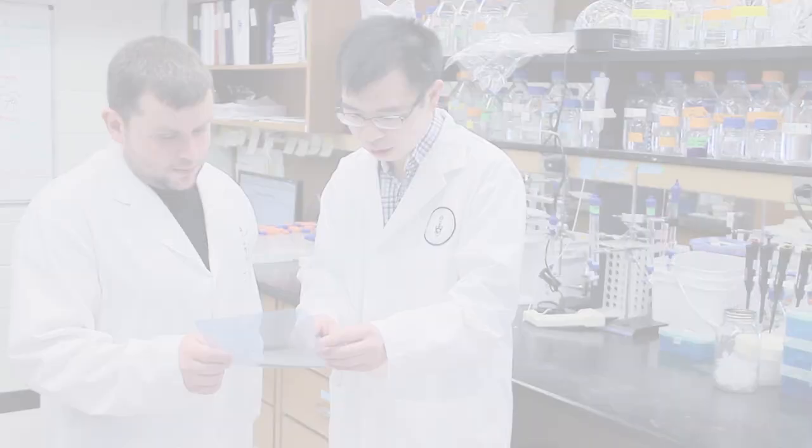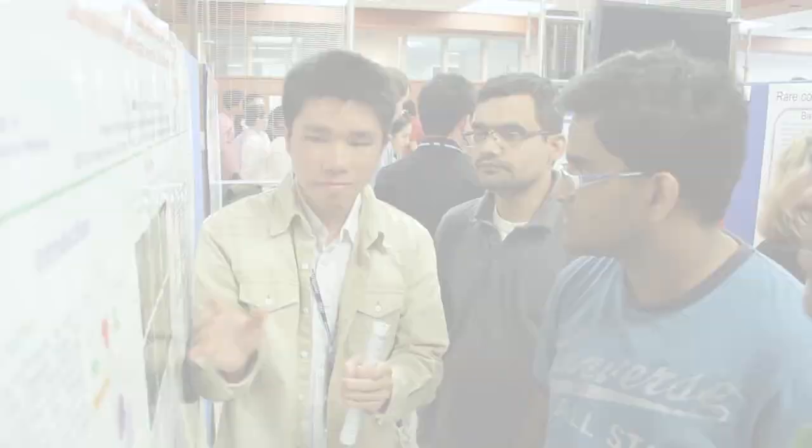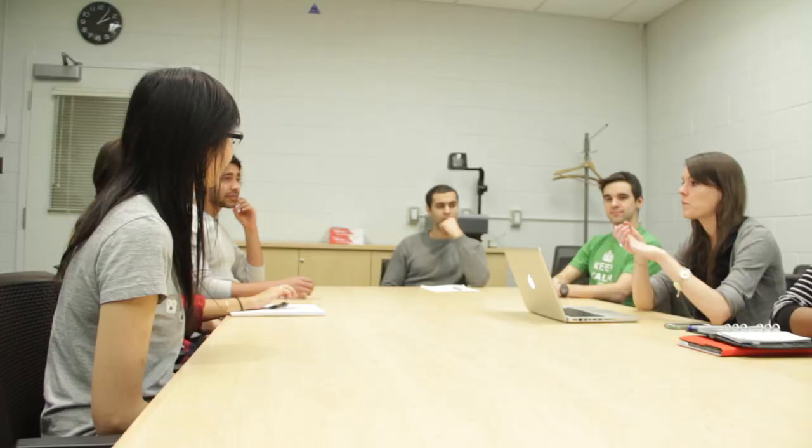Once you have an area of interest that you want to pursue, speak to course instructors and professors, teaching assistants, and graduate students whose areas of study are of interest to you. Talk to classmates and upper-year students, especially those who have already participated in undergraduate research, including the research opportunity program, credit courses, and summer student research opportunities. Join undergraduate student societies and unions, which often provide information sessions and seminars about research experiences.